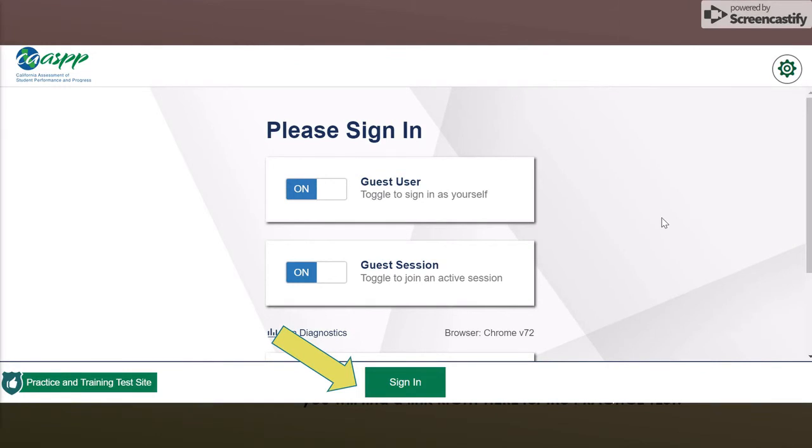Once your teacher has asked you to enter the practice testing portal, it might look like this. On the bottom left hand corner, it will say practice and training test site so you can verify beyond a shadow of a doubt that this is just the practice. You will not use a user ID or a password. You do not need a session ID. You will simply choose sign in at the bottom of the screen.